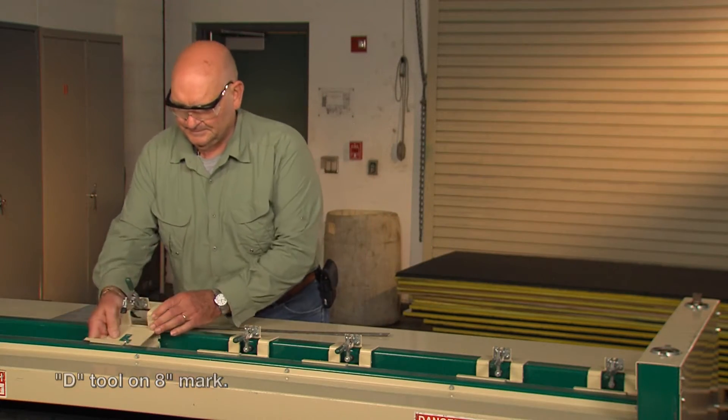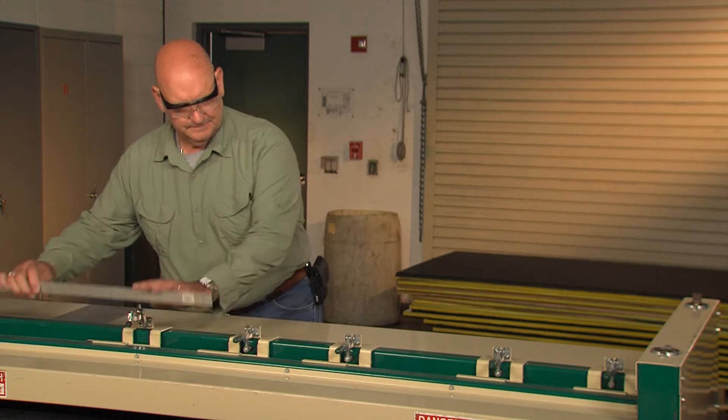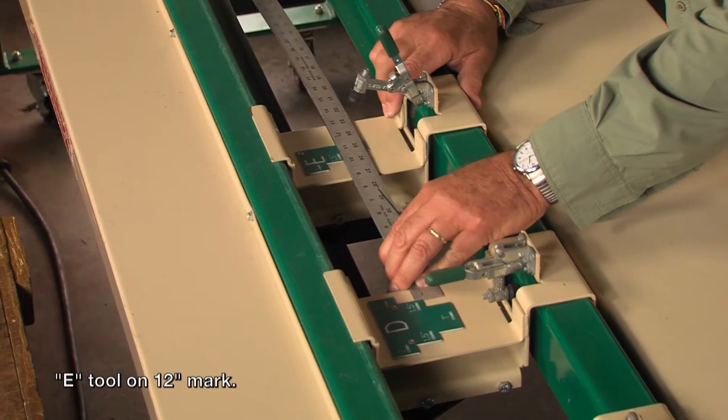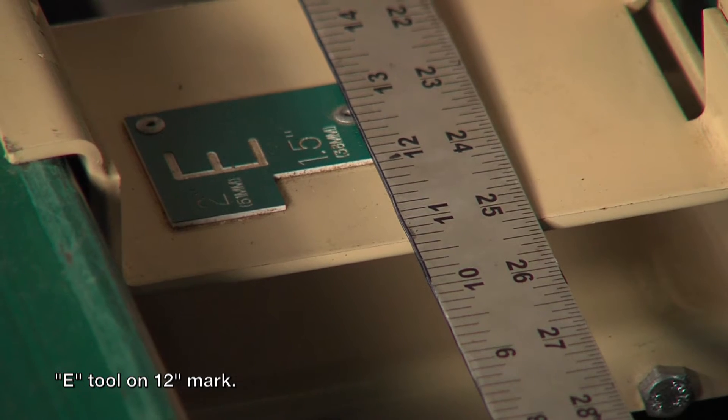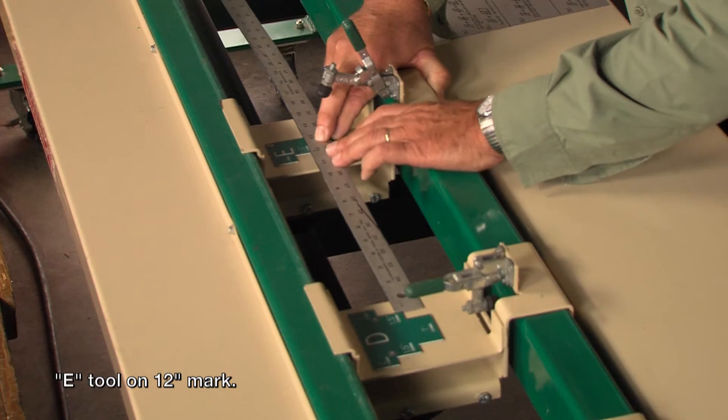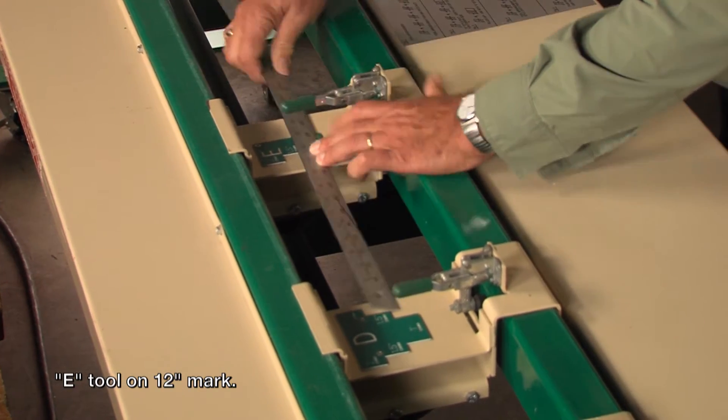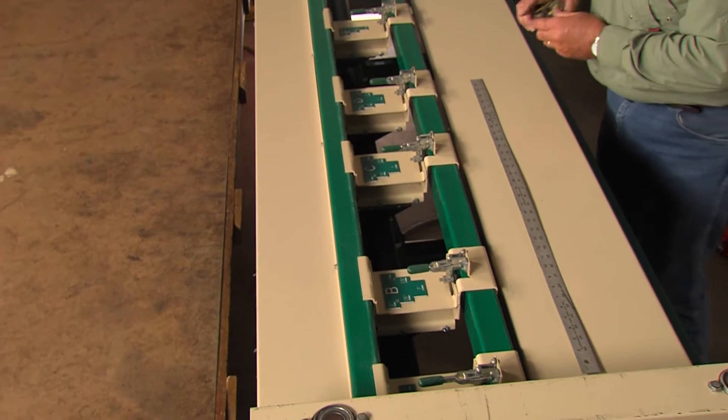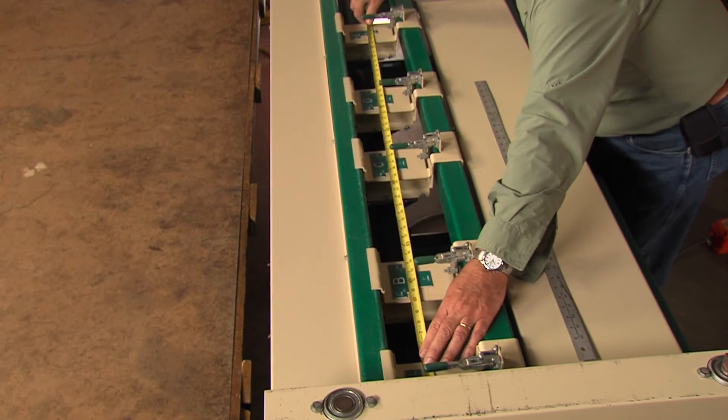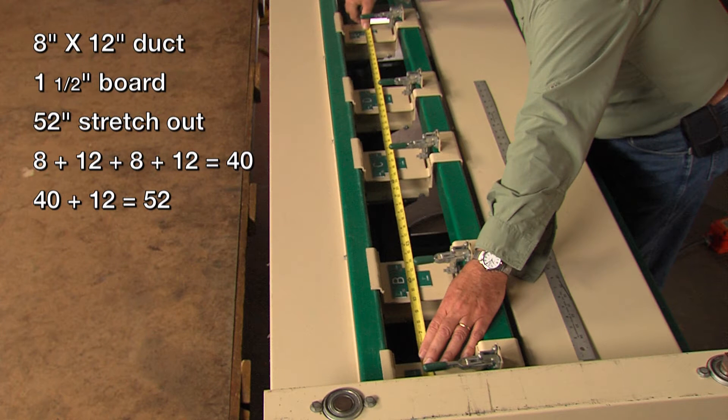Place the E tool on the toolbar. Measure from the right side of D to the left side of E one and a half inch tab, this time using 12 inches again. Double check the measurements and measure the overall stretch out length.